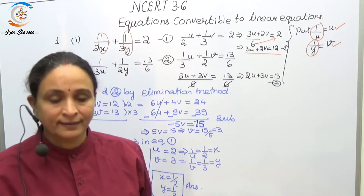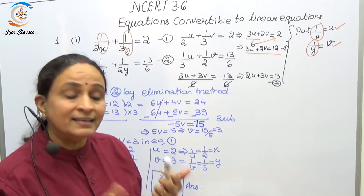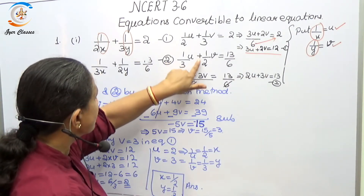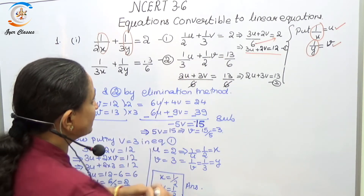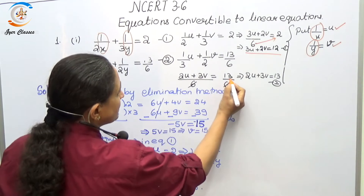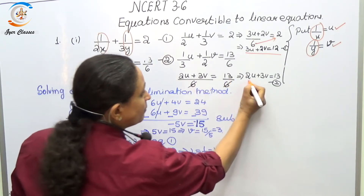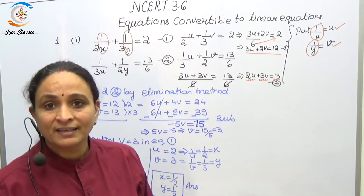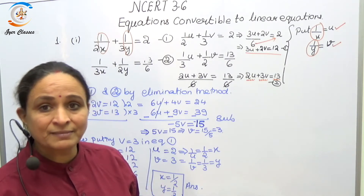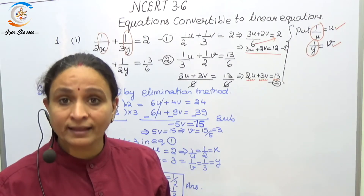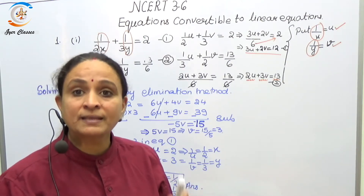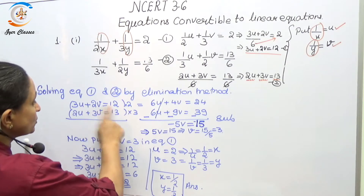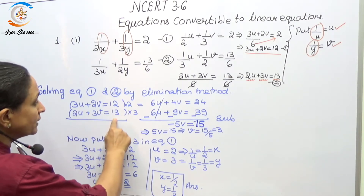Similarly, solving the second equation: 1/(3x) becomes (1/3)u and 1/(2y) becomes (1/2)v, giving (1/3)u + (1/2)v = 13/6. Taking LCM, the 6s cancel and the simplified form is 2u + 3v = 13. So I now have two simple linear equations: 3u + 2v = 12 and 2u + 3v = 13.